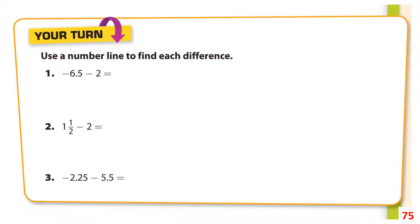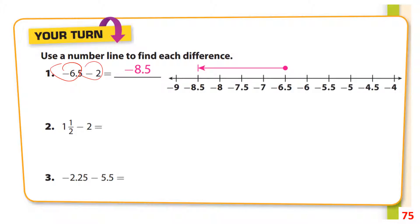Use a number line for these problems. For the first one, we start at negative 6.5 and move to the left two spaces, ending up at negative 8.5.